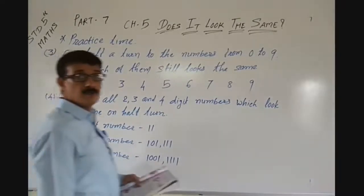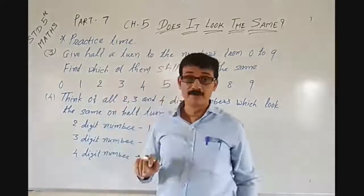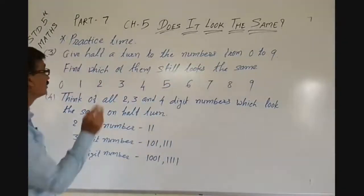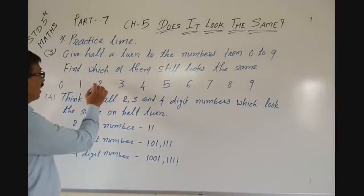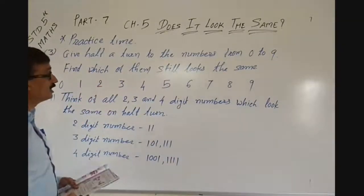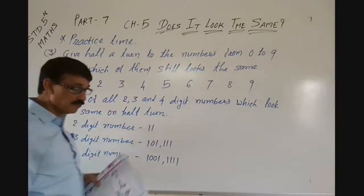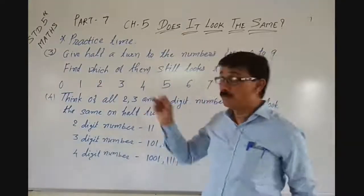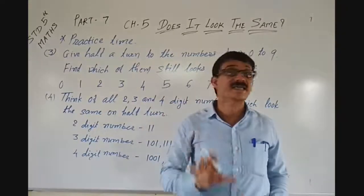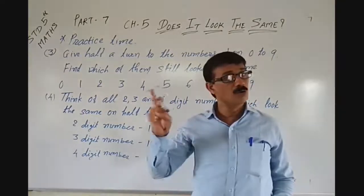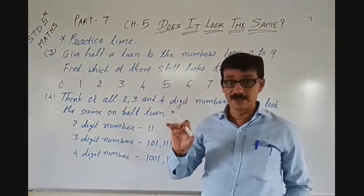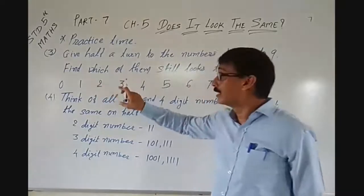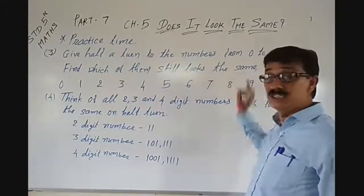Now let's go for the next practice — that is the third one. Give a half turn to the numbers from 0 to 9 and find which of them still looks the same. We will give half turn to all the digits from 0 to 9 — total 10 digits — and try to find out which of them still look the same.